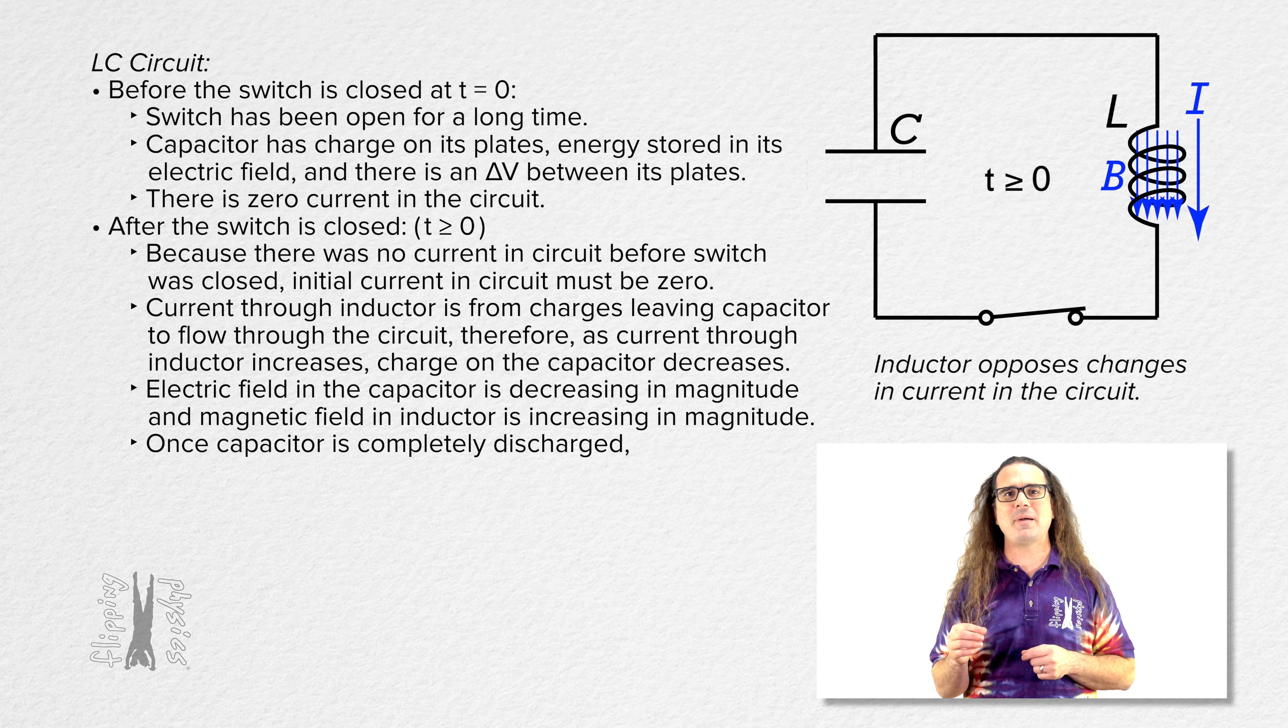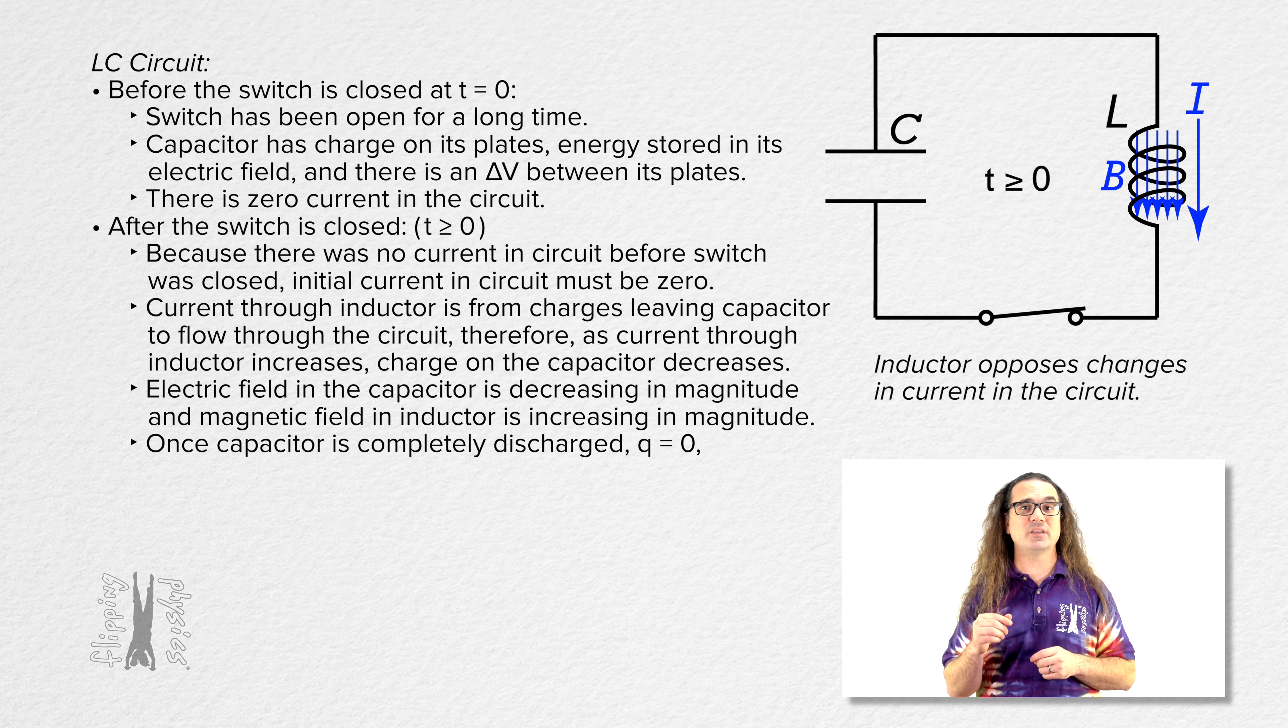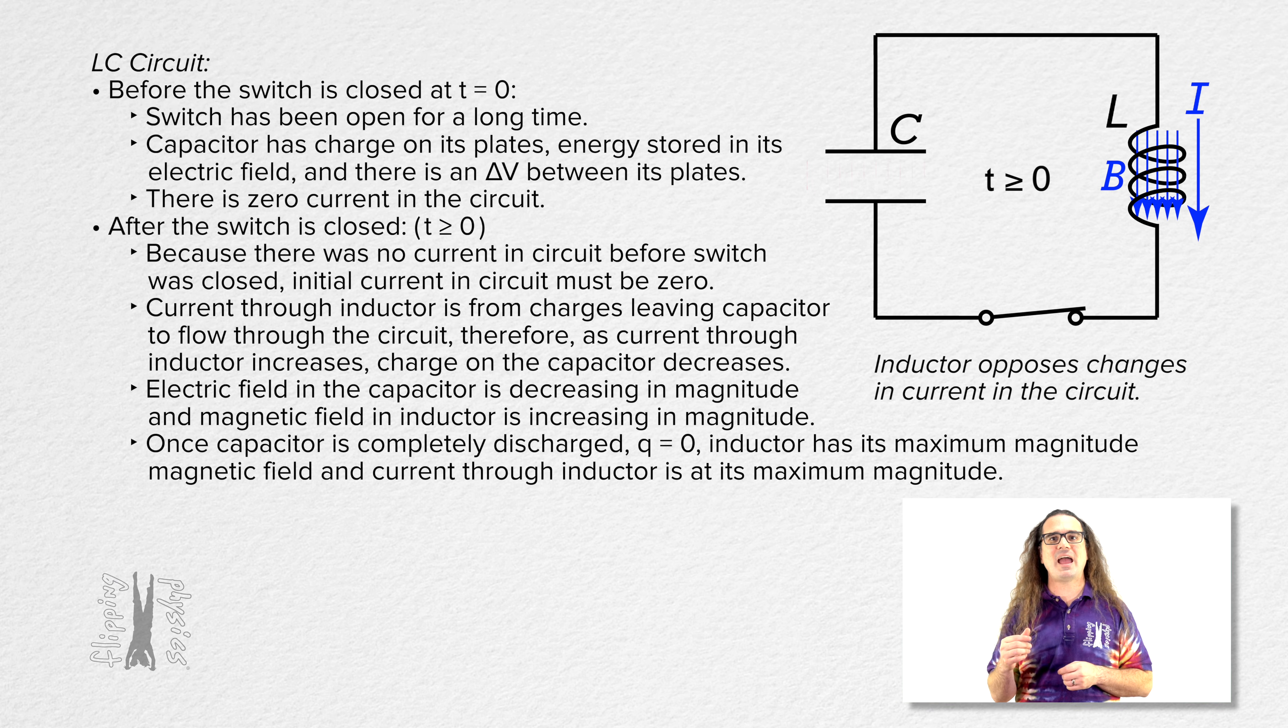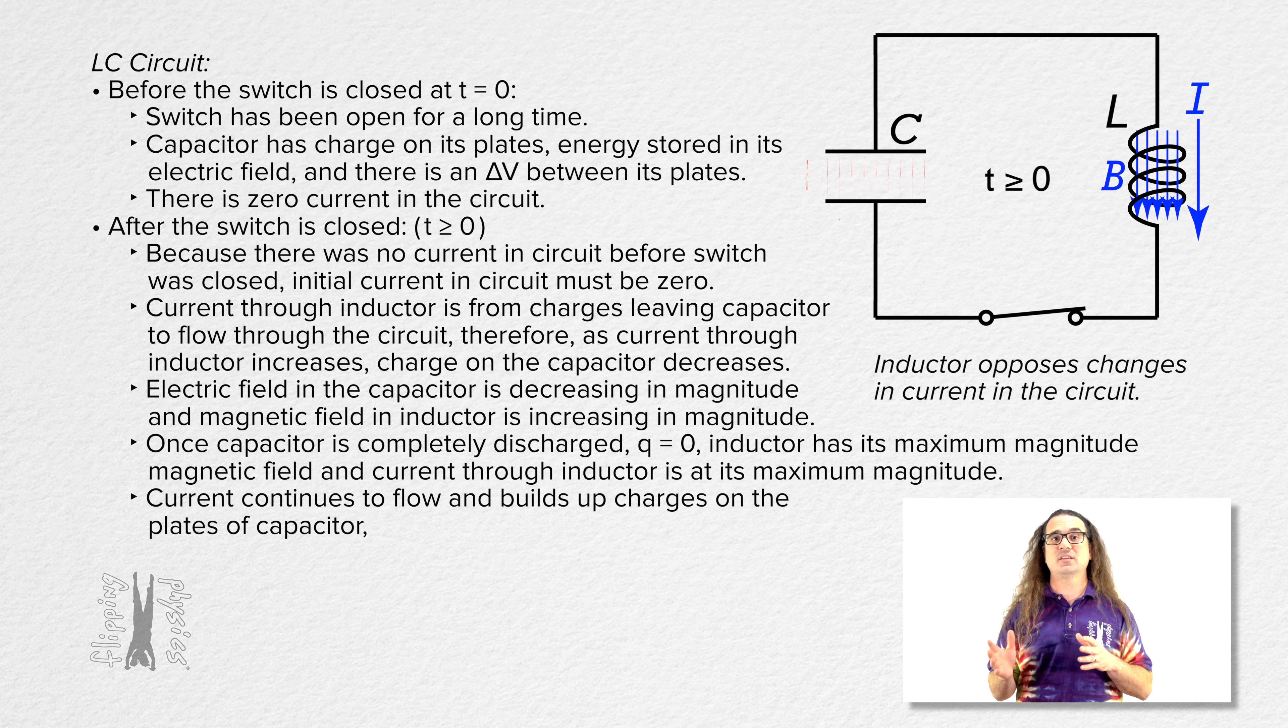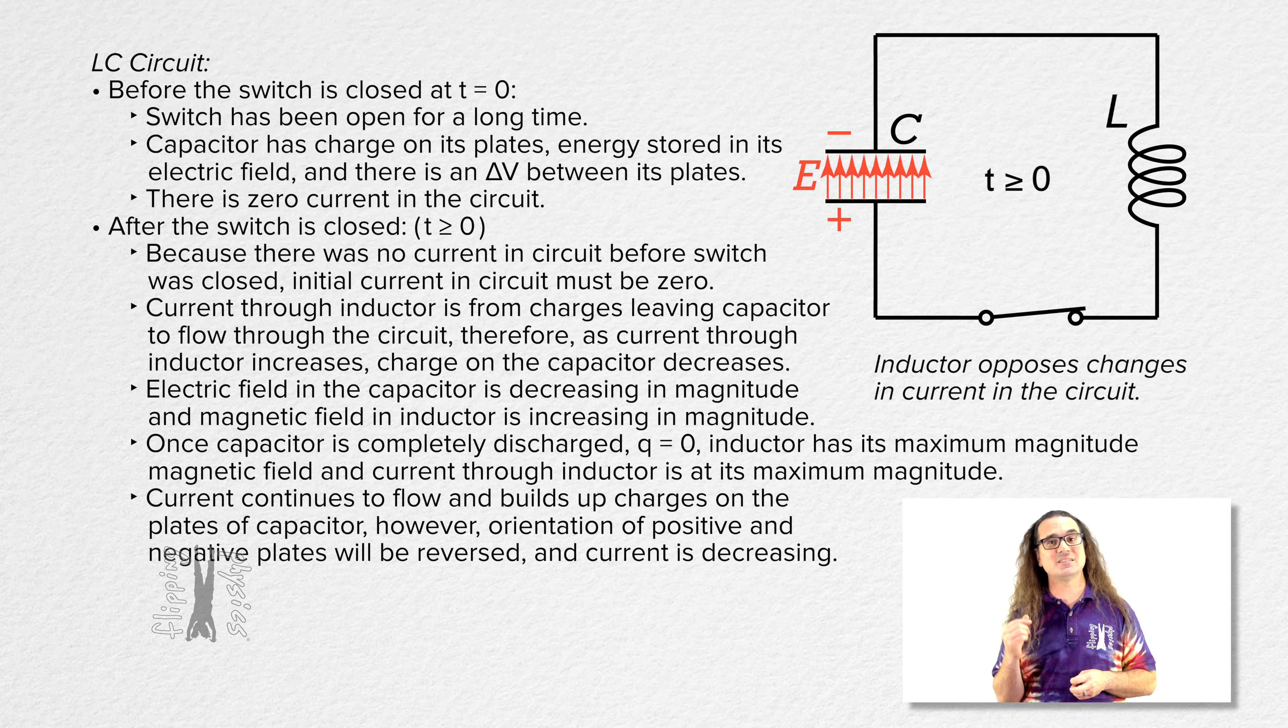Once the charge on the capacitor is completely discharged, the charge on the plates of the capacitor equals zero, the inductor has its maximum magnitude magnetic field, and the current through the inductor is at its maximum magnitude. Current continues to flow and builds up charges on the plates of the capacitor. However, the orientation of the positive and negative plates will be reversed and the current is decreasing.